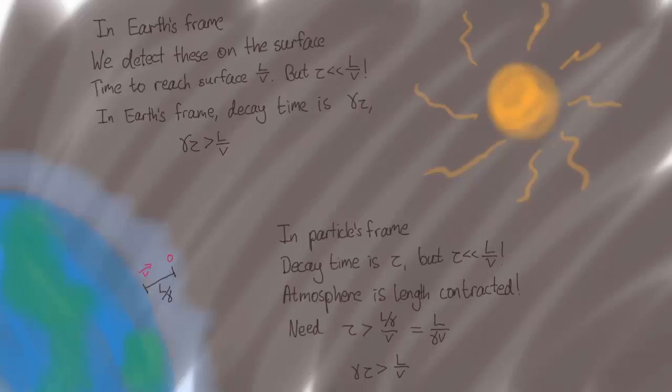This is the general theme of paradoxes in special relativity. It seems like, looking at the situation from two different points of view, you get two different physical outcomes. But when you take everything into account and think clearly about the physical situation, you find out that there is no real problem and everything works out.